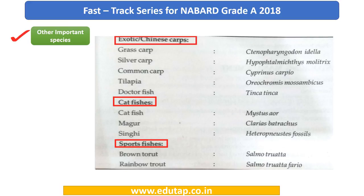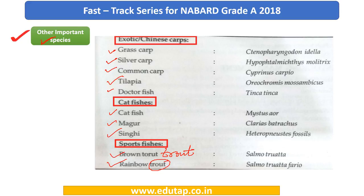Next, we look at other important species. Under exotic Chinese carps you have Grass Carp, Silver Carp, Common Carp, Tilapia, and Doctor Fish. Under Catfish you have Catfish, Magur, and Singhi. Then there is Brown Trout and Rainbow Trout. Please pause the video here and make sure you learn the scientific names so that in the examination, if asked which of the following are important Indian major carps, you will be able to locate the correct answer.